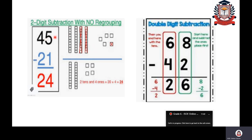I have a two-digit number here: 45, and I am going to subtract 21 from 45. We know 45 is the bigger number and 21 is smaller. We start subtraction from ones place only. In ones place: 5 minus 1. Take five fingers and take away one finger — that gives you four.